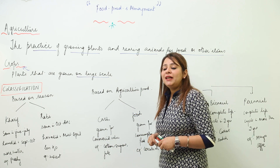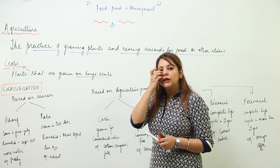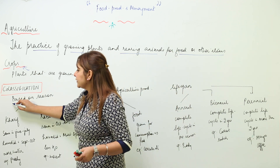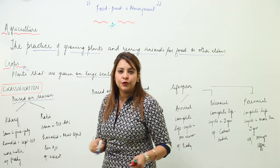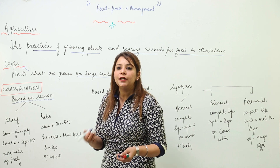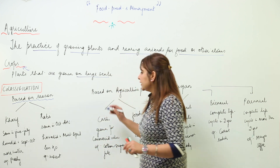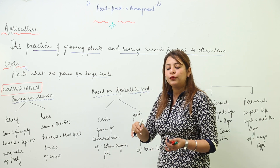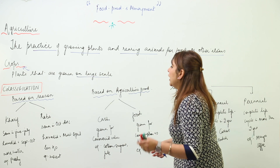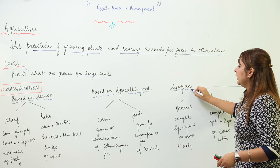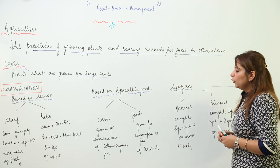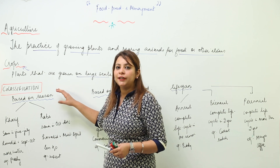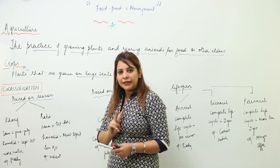We can classify crops depending upon different factors: the season they require for growth, the agricultural production and purpose they serve, and their lifespan. Starting with the first classification — the season in which they grow well — we have two kinds of crops: kharif crops and rabi crops.